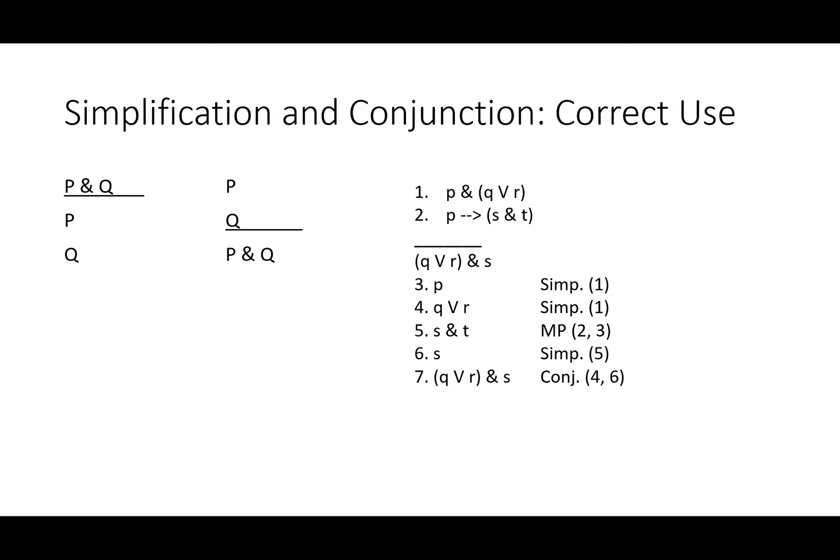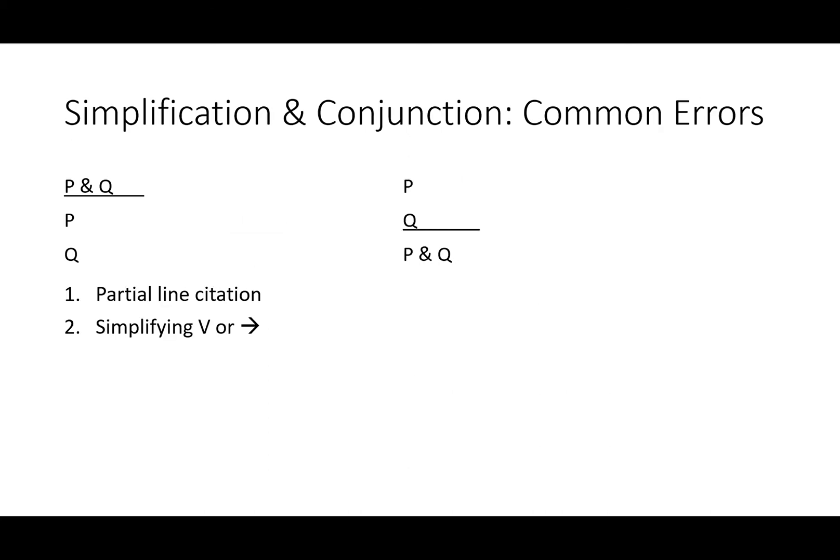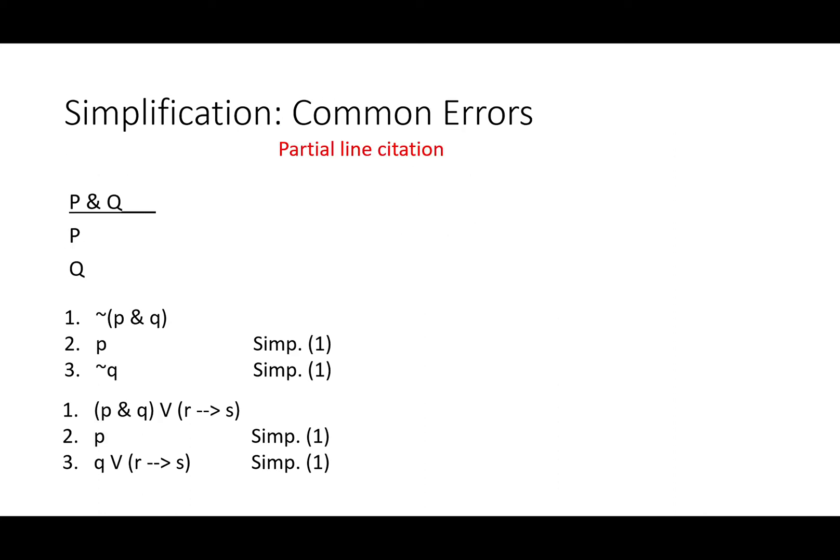Let's take a look at some common errors. First, there's the possibility of citing only a partial line instead of a whole line. Second, there's an unfortunately common error of using simplification on disjunctions and conditionals. Let's look at some ways you might do this wrong.